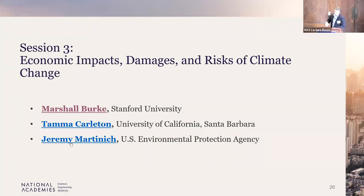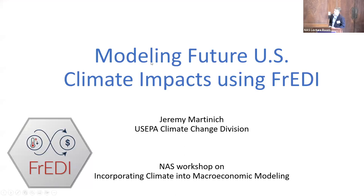Our third and final speaker is Jeremy Martinich, chief of the Climate Science and Impacts Branch at the EPA. The branch's work includes developing indicators tracking observed effects of climate change and developing the climate science and economic analyses supporting EPA regulation, including the CIRA project — a collaborative modeling effort to quantify and monetize the impacts of climate change in the US. We heard top-down global econometric analysis and bottom-up global analyses; I'm going to come down to the US and talk about some of our modeling at EPA.